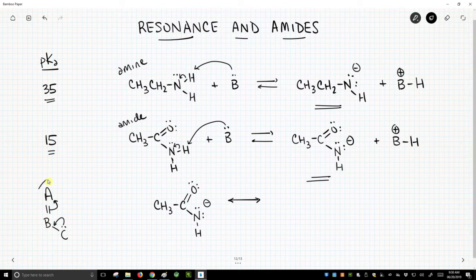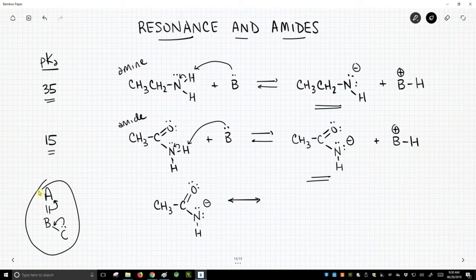So if we look at the bottom of the screen, bottom left, that's our model, our template for resonance. We need to have a double bond or more specifically a pi bond next to an atom with a lone pair, and that's exactly what we have in the conjugate base of our amide.